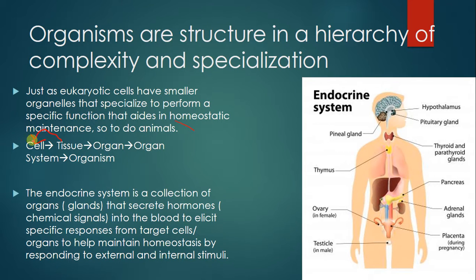The endocrine system fits this hierarchy. It is a collection of glands that secrete hormones—chemical signals that travel through the blood to all cells and elicit specific responses from target cells to help maintain homeostasis by responding to certain external or internal stimuli. Certain stimuli cause hormones to be produced; they travel through the blood to target cells where they elicit a specific response.